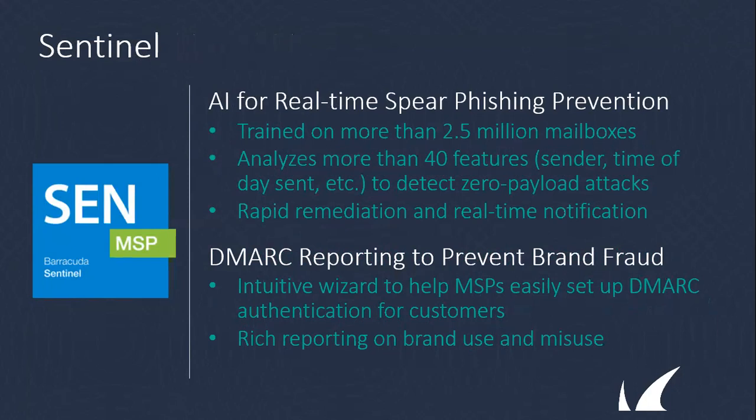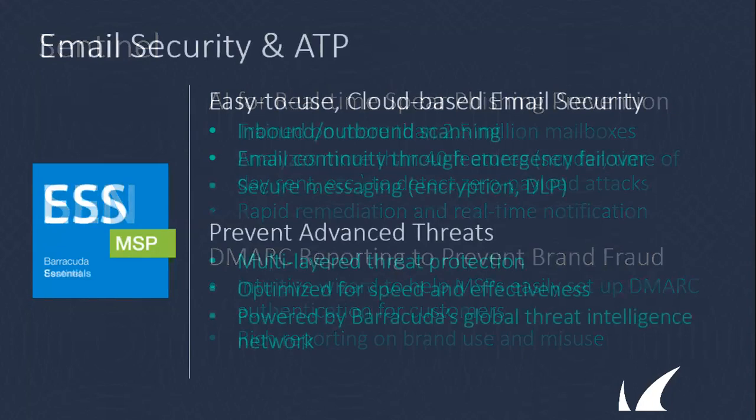Sentinel, which is what the Email Threat Scanner is based off of, is specifically designed for Office 365. It tunes into Microsoft's actual APIs and looks through the previous domain history of email exchanges, analyzing 40 different features or variables within a single email item to identify spear phishing attacks. Spear phishing is the type of attack that bypasses any mail filtering system in existence today except Sentinel — mainly because there's no malicious payload within the email items sent.